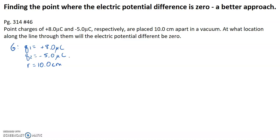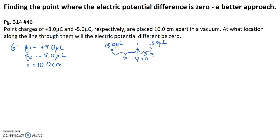If we have a positive 8 micro coulomb charge and a negative 5 micro coulomb charge, there will be somewhere closer to the negative 5 micro coulomb charge where the electric potential is zero. If we label this distance as x, then the remaining distance to the other charge would be 10 minus x.